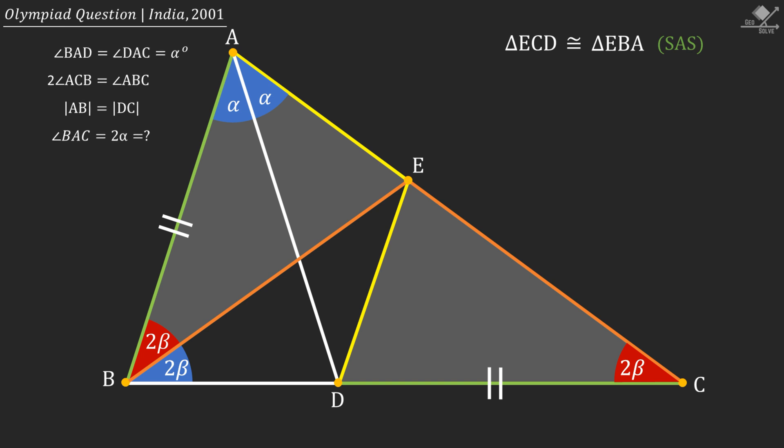From the exterior angle theorem, we know that angle BEA will be 4β degrees. And from congruency, the angles corresponding to the green equal line segments must be equal.